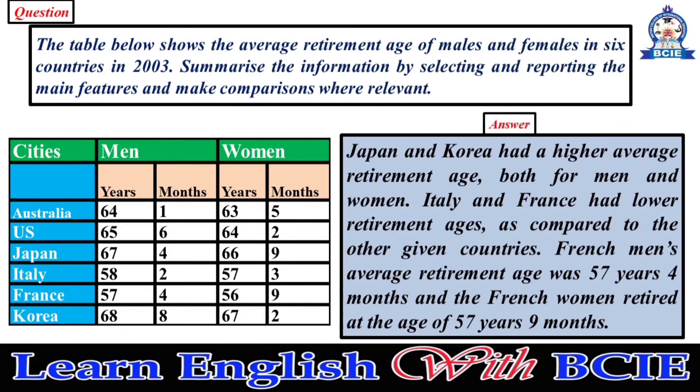Japan and Korea had a higher average retirement age, both for men and women. Italy and France had lower retirement ages as compared to the other given countries. French men's average retirement age was 57 years four months, and French women retired at the age of 57 years nine months.